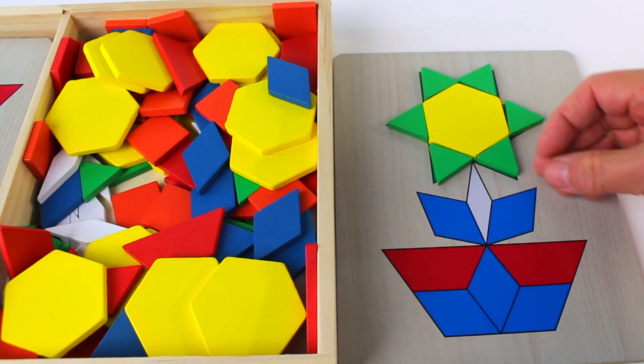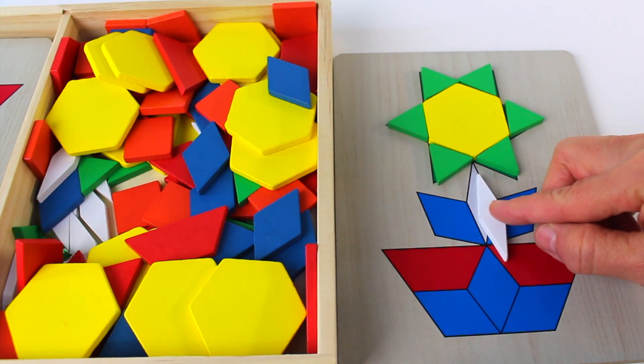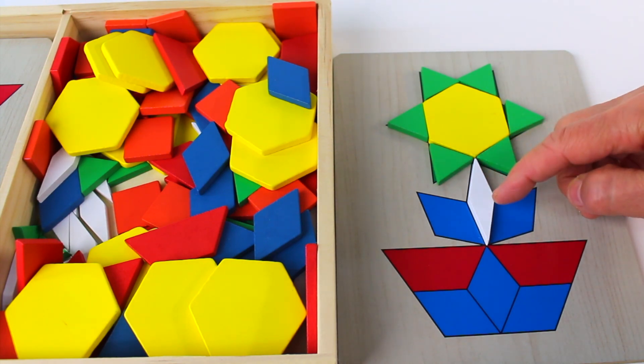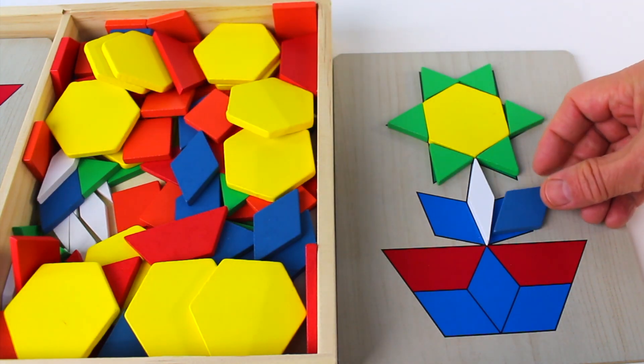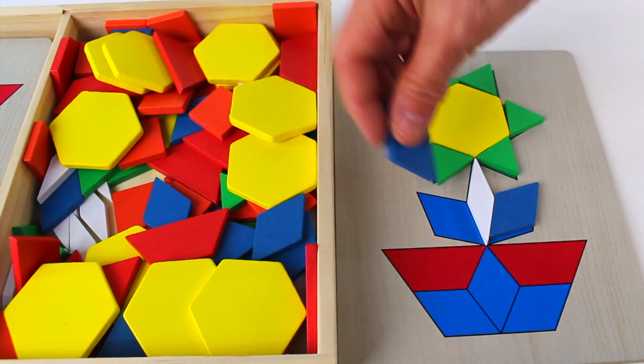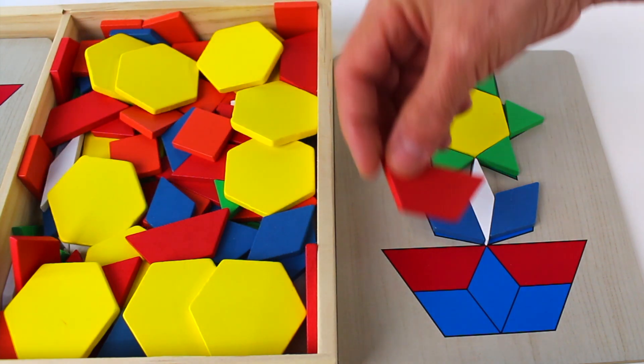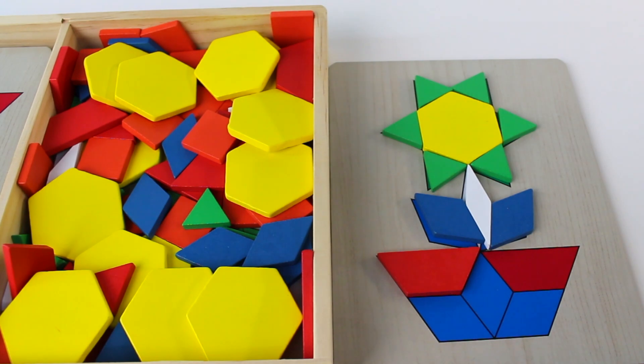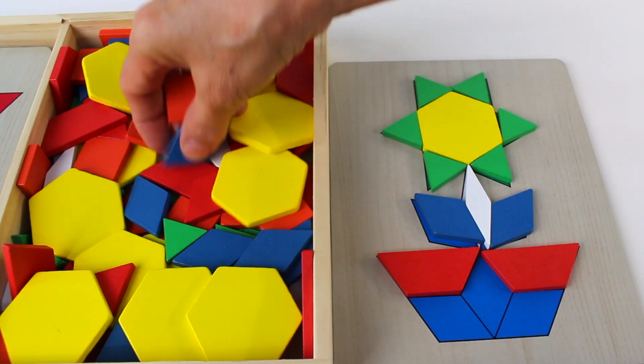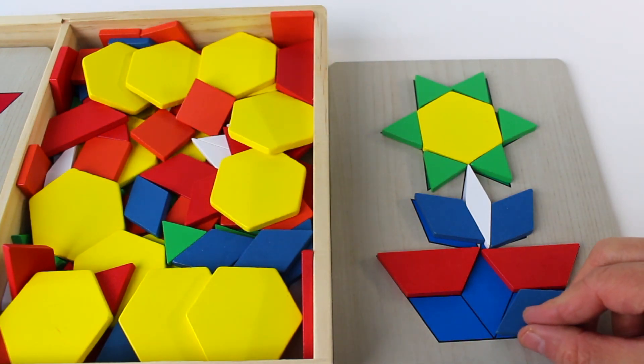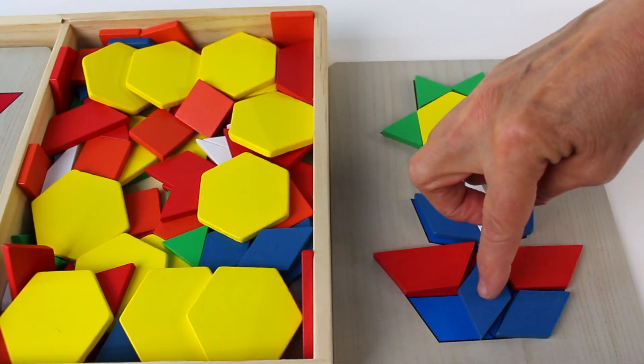And now we have a rhombus. It looks like a diamond. It has four equal sides: one, two, three, four. And here is another rhombus or diamond, it's blue. We also have a trapezoid. Another trapezoid. And we have more rhombus. We have one, two, three.